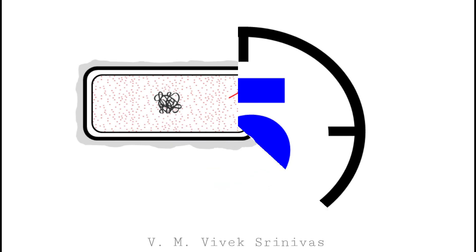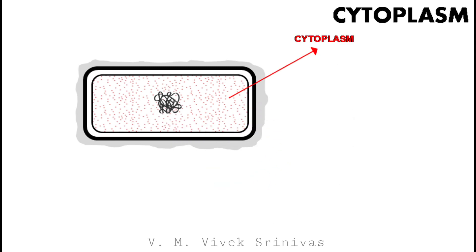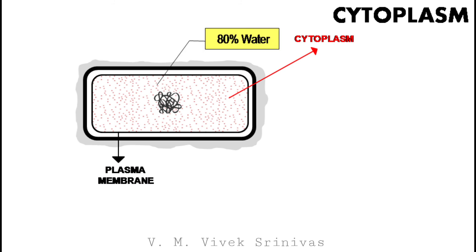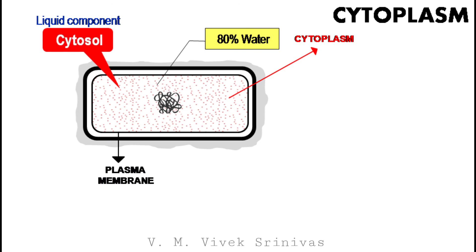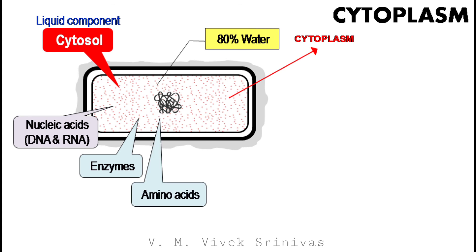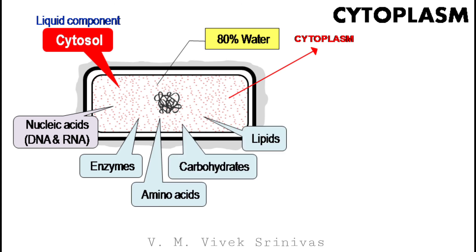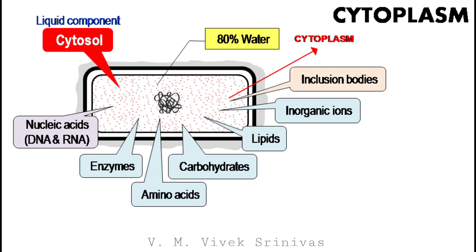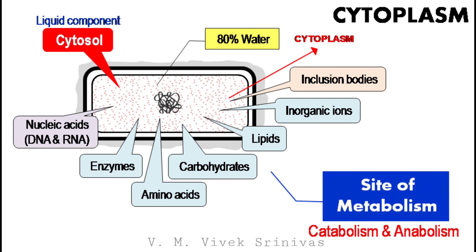The next component is the cytoplasm. The cytoplasm is enclosed inside and protected by the plasma membrane. 80% of the cytoplasm is composed of water. The liquid component of the cytoplasm is referred to as the cytosol. The contents of cytoplasm include nucleic acids — DNA and RNA — enzymes, amino acids, carbohydrates, lipids, and inorganic ions. Besides these, many inclusion bodies with specific functions are also present. The cytoplasm is the site for bacterial metabolism.